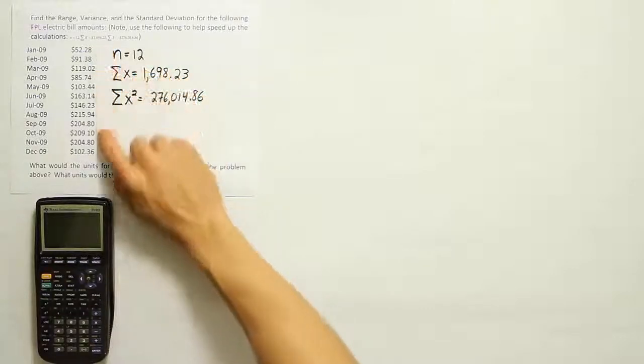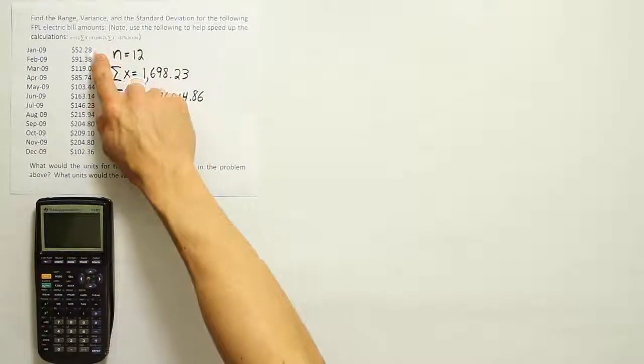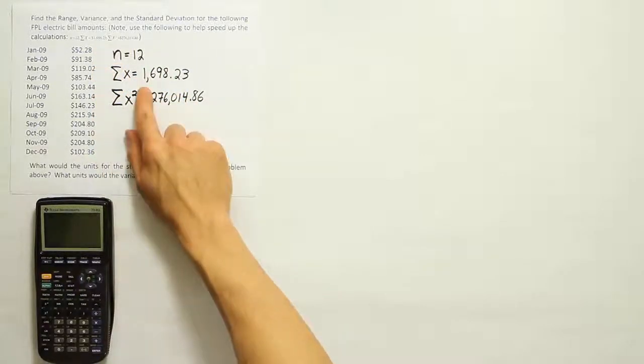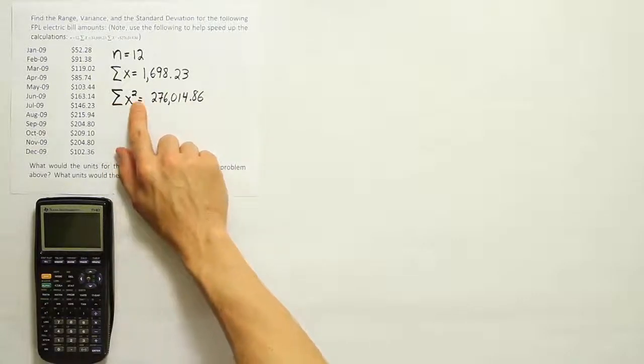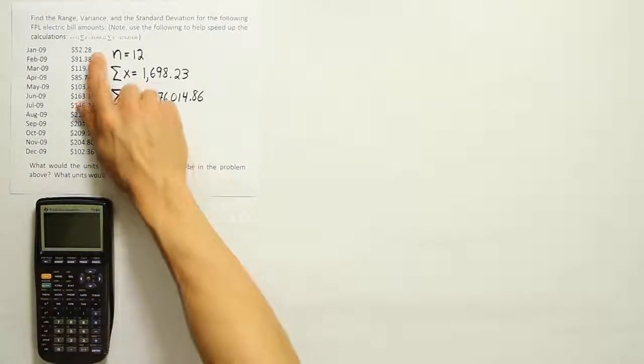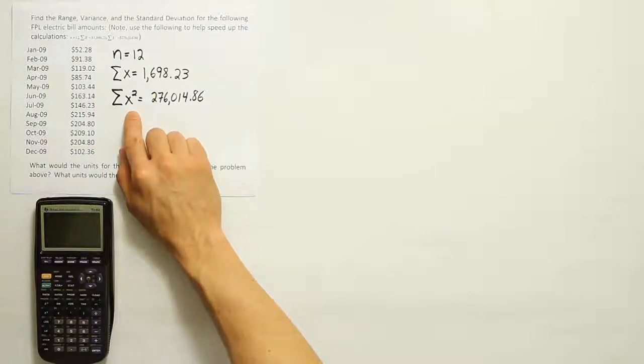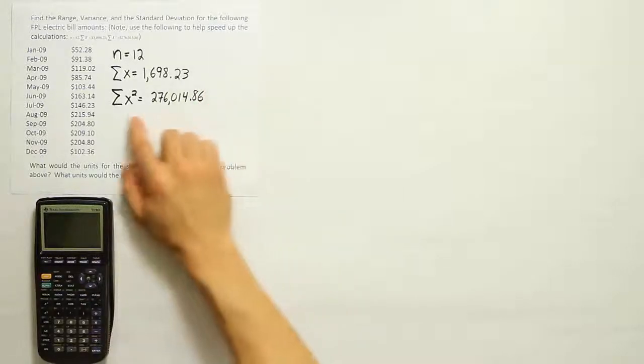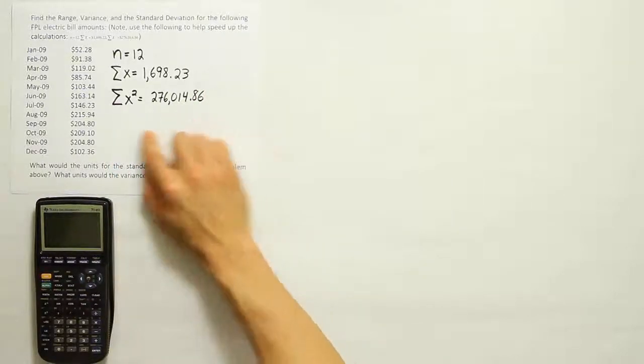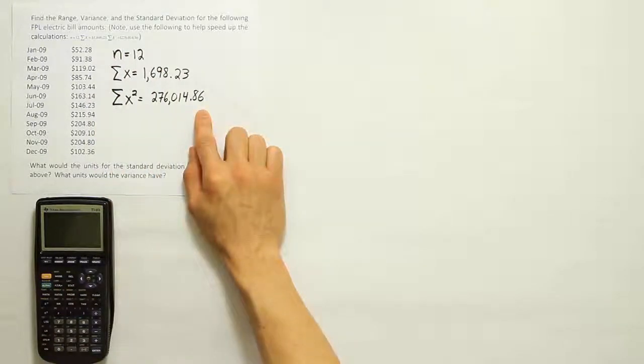n equals 12 because there are 12 values here, the 12 months of data. The summation of x, what they did to get that is they added up all these values to end up with the total for the whole group. Then they have the summation of x squared. If you wanted to do that at home, you would square each of these values. Once you were done squaring all of them, you would add that list up that you've created and you would end up with this value here. This part here, the squaring each value and then adding it up, that's kind of tedious so that's why this problem has given it to us to start with.